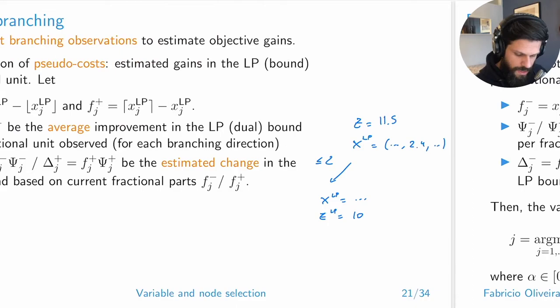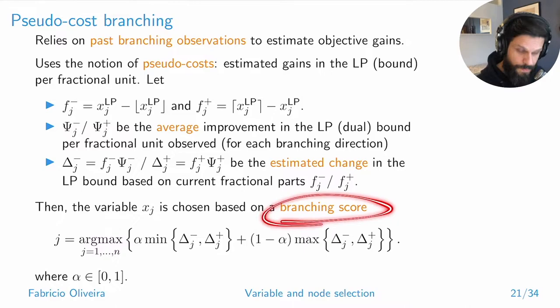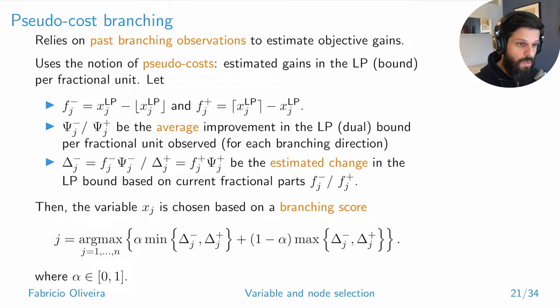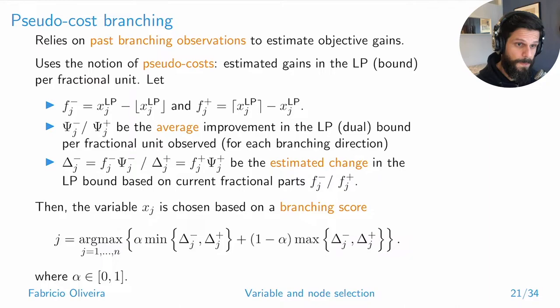Once you have these delta values, you can define a branching score — a function that can take different forms — giving a score for how good a particular branching decision is likely to be. One well-known possibility uses a multiplier alpha, and you pick the index j that has a combination of the minimum and maximum of the deltas.